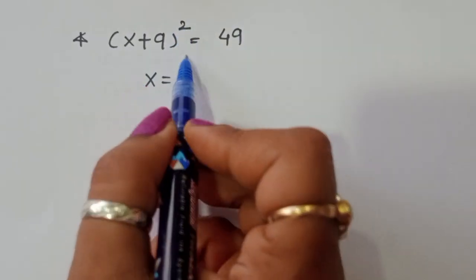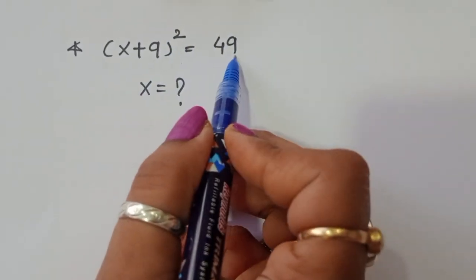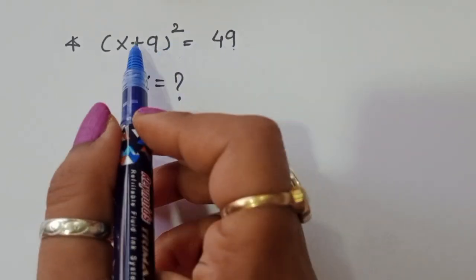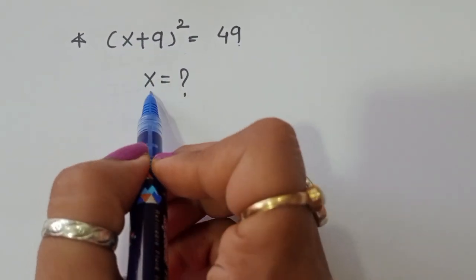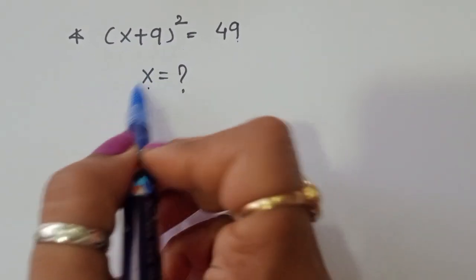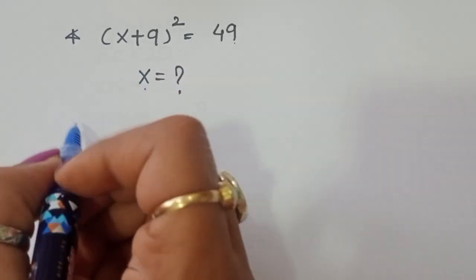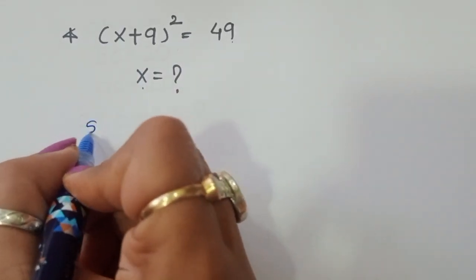Given (x + 9) whole square is equal to 49, we have to find out the value of x. Let's see the solution.